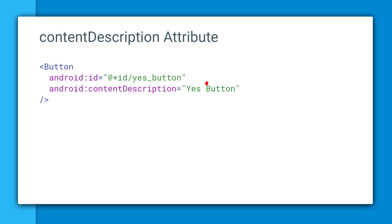Words like buttons, selected, checked, etc. should be omitted from content descriptions, as Android natively does that for you.